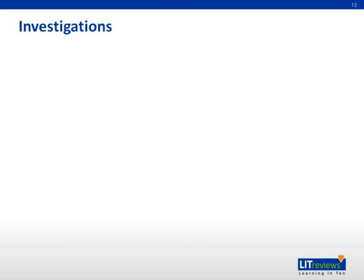The following investigations are important for a patient with ovarian hyperstimulation syndrome. Full blood count: the hypovolemia of OHSS leads to hemoconcentration and a hypercoagulable state; therefore, hematocrit increases. Liver panel: AST, ALT, and alkaline phosphatase will increase. Kidney panel: renal function is reduced; blood urea nitrogen and creatinine values are increased, whereas albumin and protein levels are decreased. Electrolyte imbalances, hyperkalemia, and acidosis may also be present.